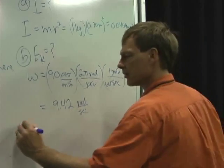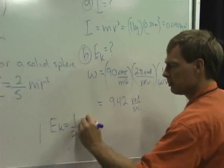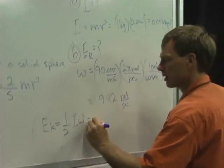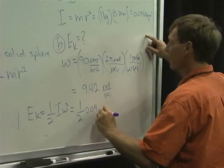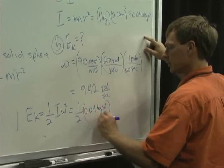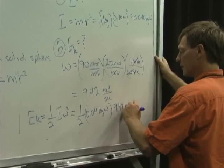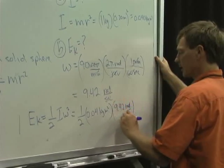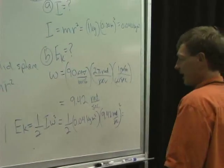And so the kinetic energy is 1/2 times moment of inertia times angular velocity squared, which is 1/2 times 0.04 kilogram meter squared times 9.42 radians per second, and that's squared. So I've got to figure that out.